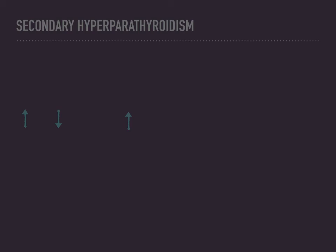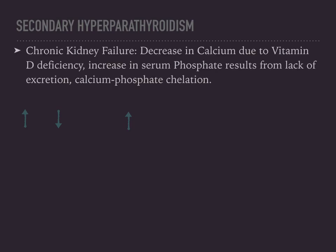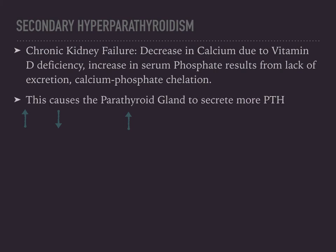Secondary hyperparathyroidism — the most common cause is chronic kidney failure. The failing kidney cannot produce active vitamin D, leading to decreased calcium. There is also an increase in serum phosphate because it is not being excreted, causing hyperphosphatemia. Excess phosphate also chelates calcium. The parathyroid gland secretes more PTH in response to low calcium, but it doesn't help. The net effect is elevated PTH, depressed serum calcium, and elevated serum phosphate.